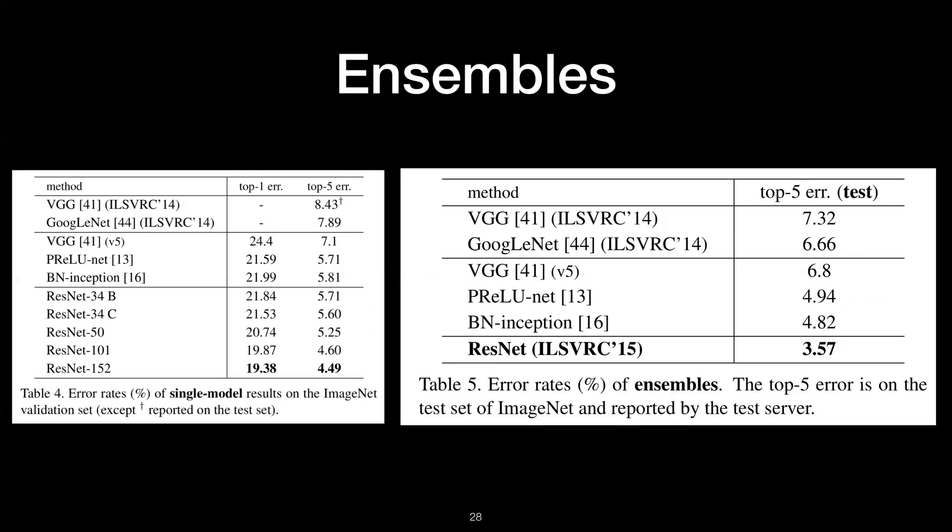This is the experiment result on ensembles. As you can see from the left side, the single model, ResNet 152, achieves even better results than previous ensemble results from other models. Their ensemble achieved even lower error rate of top 5 error of 3.57.